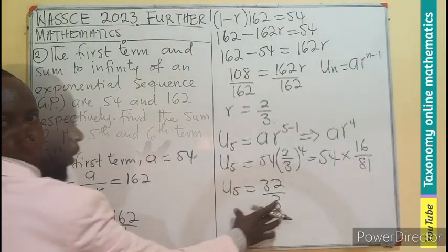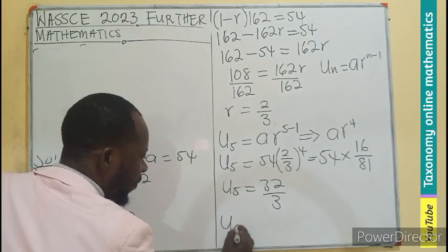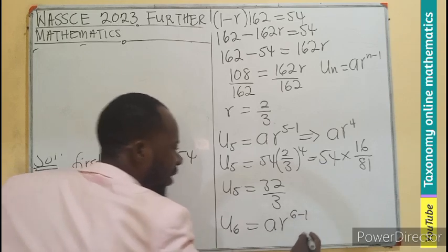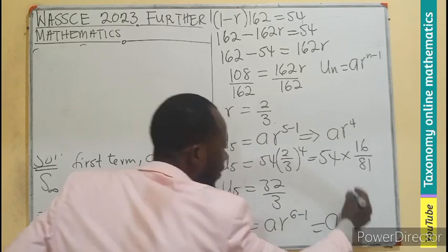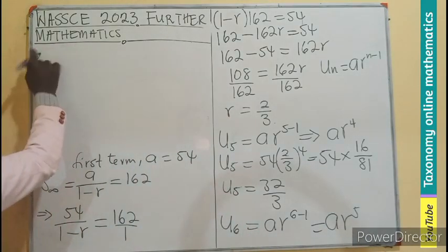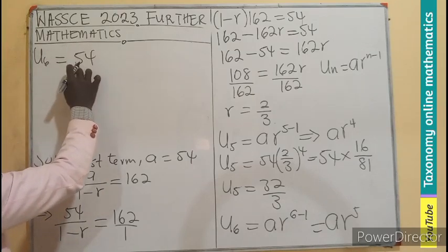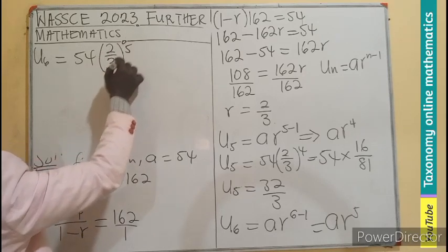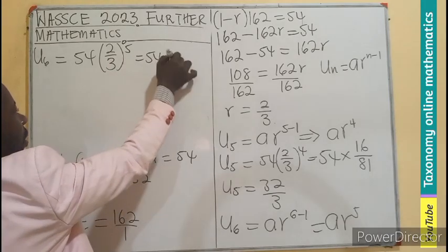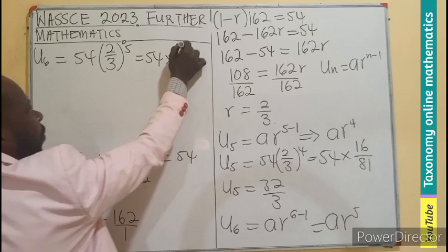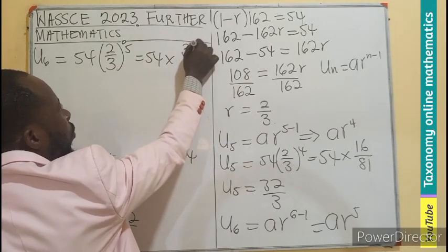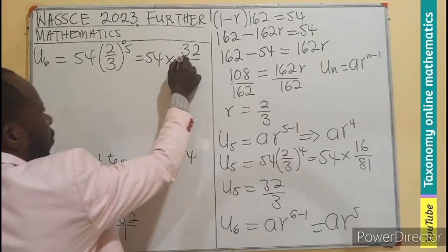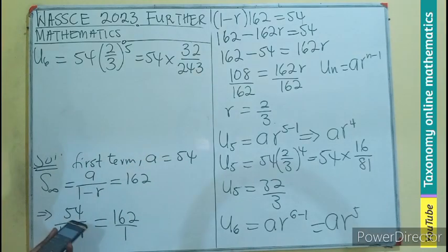Now we are left with the 6th term. We know that your 6th term will be AR exponent 6 minus 1, which will mean AR exponent 5. So per substitution, our 6th term will be 54 as the first term, 2 divided by 3 as the common ratio, raised to the power of 5. We can have 54 times 2 exponent 5 will be 32. Then 3 exponent 5 will give us 243.